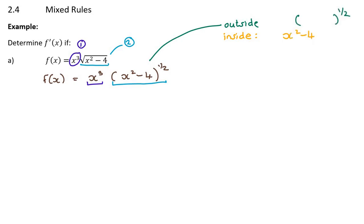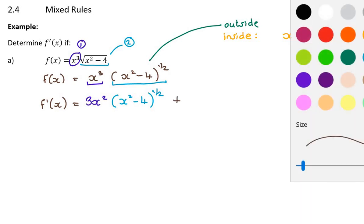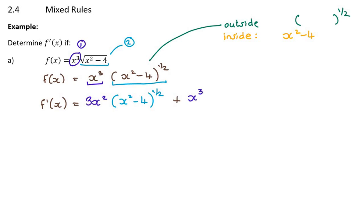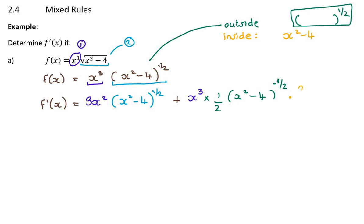Now we have to concentrate fairly hard. The derivative follows the product rule: differentiate the first function, giving three x squared, and leave the second function alone — so leave x squared minus four to the power of a half. Plus, leave the first function alone, so that's x cubed times the derivative of the second function. The second function requires the chain rule: bring down the half, leave the inside function x squared minus four to the power of minus a half, then multiply by the derivative of the inside function, which is two x.